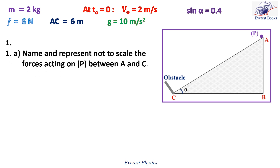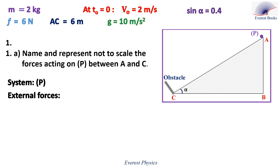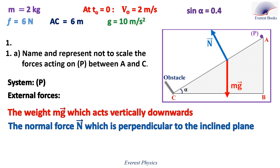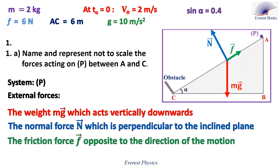Number 1: Name and represent (not to scale) the forces acting on P between A and C. Our system is the particle P. The external forces acting on this system are: the weight mg, which acts vertically downwards; the normal force N, which is perpendicular to the inclined plane; and the friction force, directed up, opposite to the direction of motion.